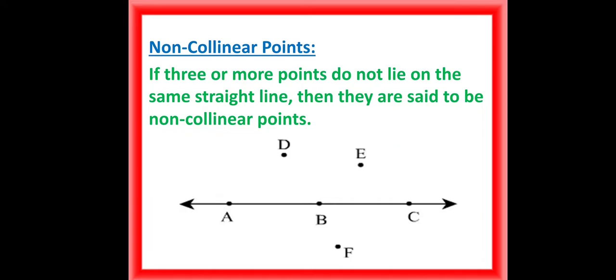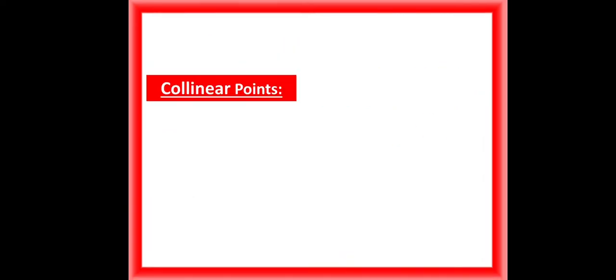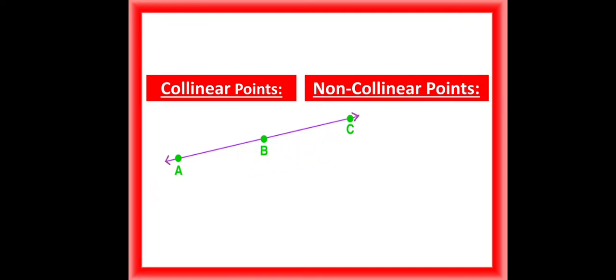Now let us once again recall what we have learned. First, we have learned about collinear points: three or more points which lie on the same straight line are called collinear points. Here A, B, and C are collinear.